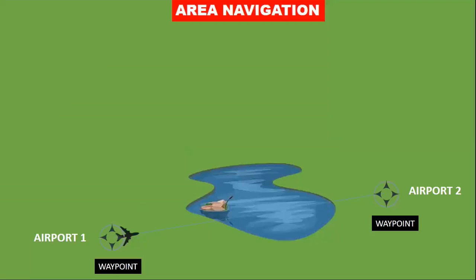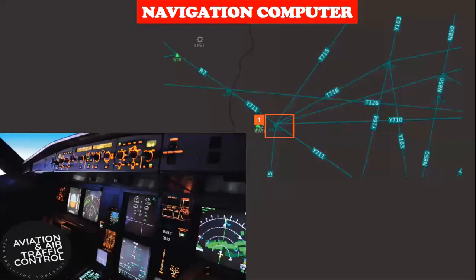Today we will delve into the world of area navigation, or RNAV, and discover how it has revolutionized air travel. In RNAV, aircraft navigate using waypoints — imaginary points in space that define the flight path. Use of area navigation started in the 1970s. Area navigation is enabled through the use of a navigation computer, the FMS. Waypoints are input into the computer with an integrated database, and the flight crew then creates a route as a series of waypoints in accordance with the flight plan.